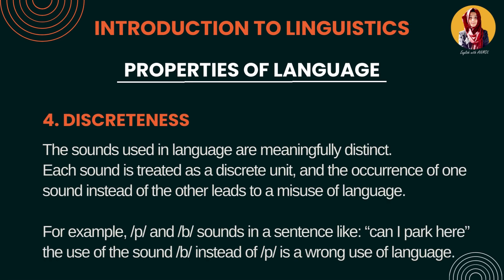Discreteness. Discreteness ke maana hain separate, distinct, mukhtalif. Discreteness language ki woh property hai jis tarah humare paas language ke andar different sounds hain, aur different sounds ke different meanings hain. Agar hum kisi cheez ka sound change kar lenge to meaning bhi change ho jaayegi. Each sound is treated as a discrete unit — har ek sound different meaning rakhta hai. For example, the sentence 'Can I park here?' — if we replace the sound 'park' with 'bus', the meaning of the sentence changes.